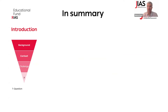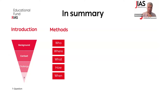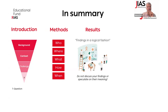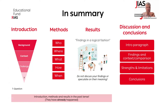To recap everything about the manuscript: the introduction starts wide — big background — and follows a funnel approach: background, context, challenge specific to your study, and then your research question. The methods cover the who, where, what, how, and when. The results follow a logical fashion — just present the data, do not discuss it. The discussion and conclusions begin with an intro paragraph, contextualize and compare your studies, be open about strengths and limitations, and then provide conclusions. Introduction, methods, and results should be written in the past tense. Discussion and conclusions should be written in the present tense. A good scientific article must tell a clear, compelling story.